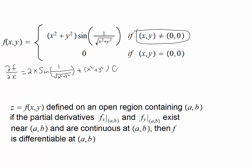When you differentiate a sine of a quantity, you get cosine of the quantity, then times the derivative by chain rule — in this case the partial derivative of the quantity. Remember this is 1 over (x² + y²), which we can write as (x² + y²) to the power negative one-half.